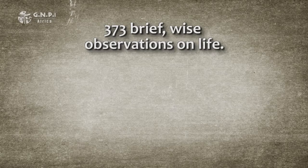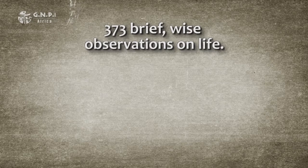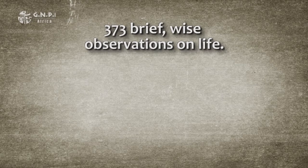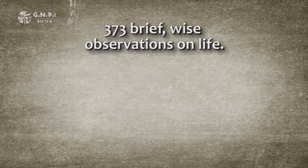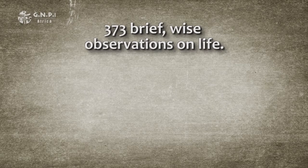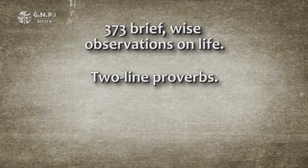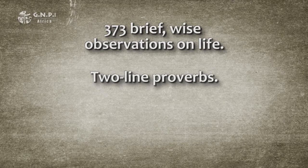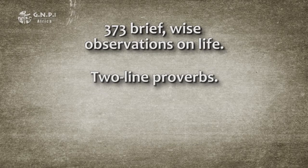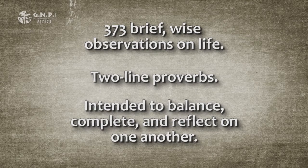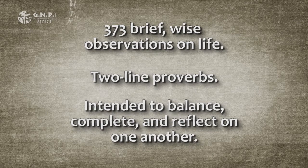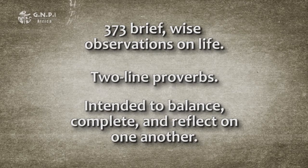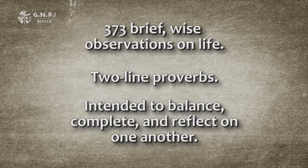This second literary unit consists of 373 brief, wise observations on life. They make their point in mostly two-line proverbs. The two lines of a proverb are intended to balance, complete, and reflect on one another.